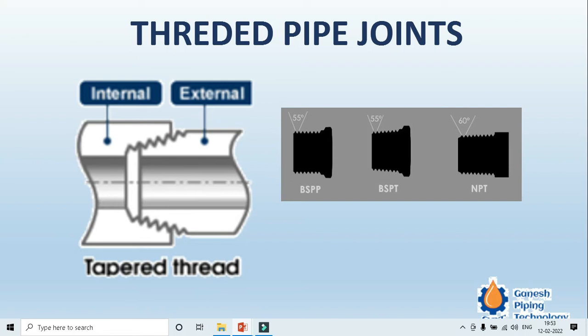For threaded pipe joints, there are two standards: NPT (National Pipe Threads) and BSP (British Standard Pipe). Both have taper and parallel threading variants. Taper threading is used where there are chances of leakage or higher pressure. BSP taper fittings are popular in hydraulic fittings and oil hydraulics, though these types of fittings are not so popular in process piping.